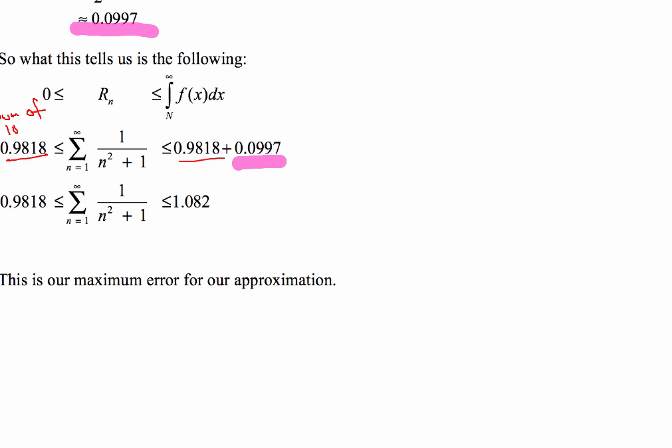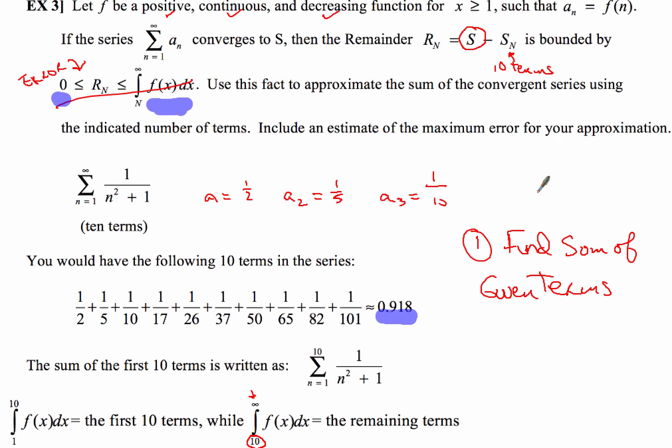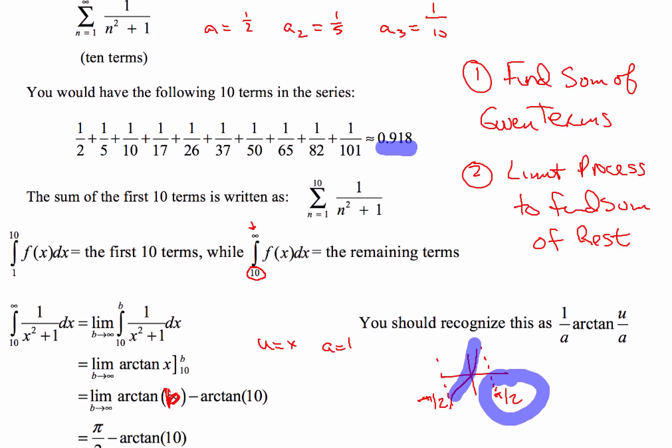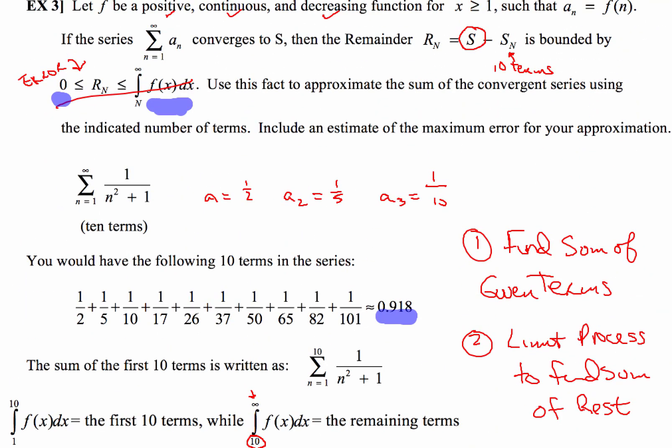All right, there's going to be some other things we do with determining error, but that's for later on. All right, and in this particular example for the integral test, that's how you determine the maximum error for your approximation. So let's recap for a second. So you're going to find the sum of the given terms first. Now, after you do that, the second thing that you're going to do is you're going to use the limit process. And what you're going to do with that is find the sum of the rest. Now, once you find the sum of the rest, you're going to simply take those two values and you're going to use them in the error formula right here. 0 is less than or equal to r sub n, it's less than or equal to the integral from n to infinity of f of x dx. So that's the last thing you do. So that's it, three steps. They're kind of long steps, but that's all right. You guys are rock stars and you can handle them.